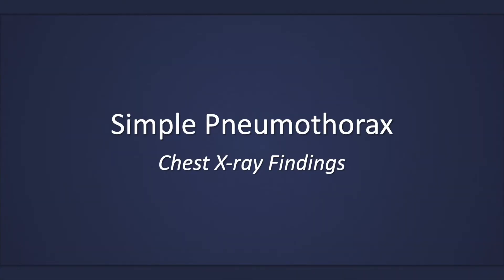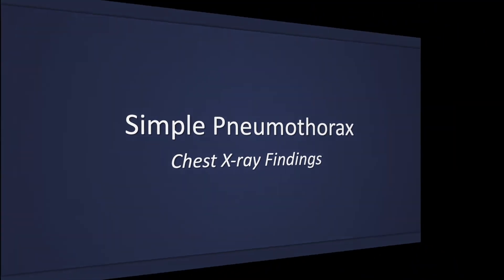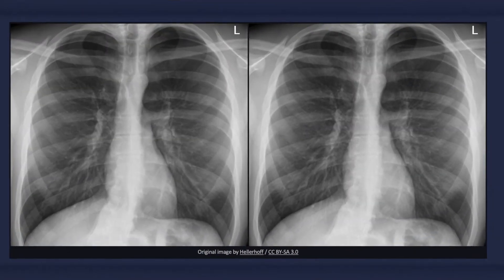This lecture will describe the classic chest x-ray findings associated with a simple pneumothorax. A pneumothorax refers to the presence of gas or air in the pleural space. It is considered a simple pneumothorax when there isn't any mediastinal shift to the contralateral side and the patient is stable.